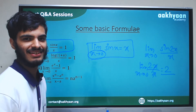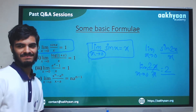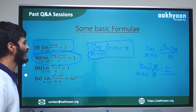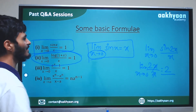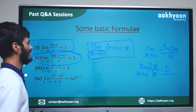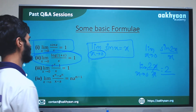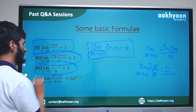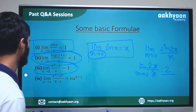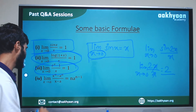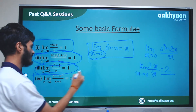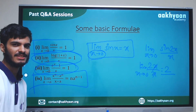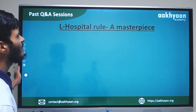Similarly, another standard formula: limit x tends to zero of log(1 + x) by x is equal to 1. And: limit x tends to zero of eˣ minus 1 by x is equal to 1. Also: limit x tends to a of xⁿ formula gives n times aⁿ⁻¹. These are the basic formulas of limits.